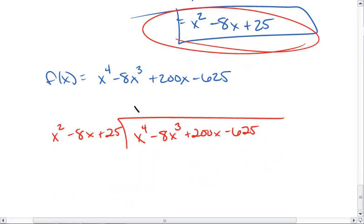I end up getting x squared so that I can multiply through, getting x to the 4th minus 8x cubed plus 25x.